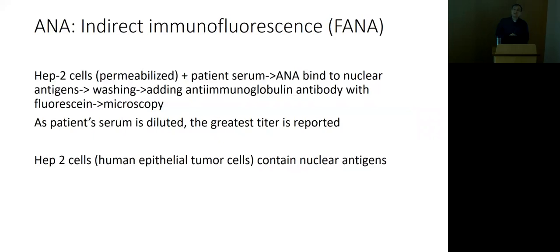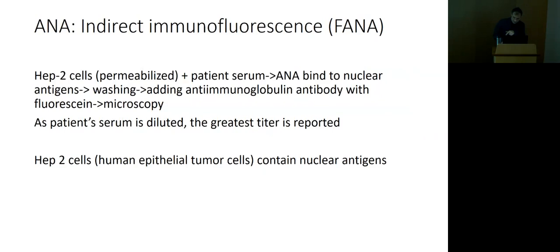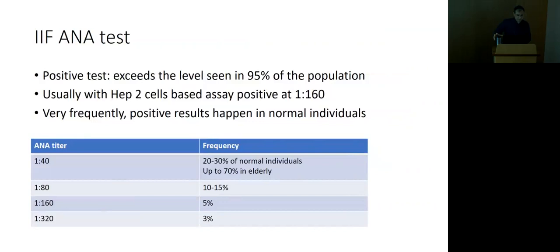When results are not expressed as titers, that's likely the ELISA method. The fluorescent ANA is more sensitive and covers more antigens. For a test to be considered positive, it should exceed the level seen in 95% of the population. With HEp-2 cell-based assays, it's typically positive at 1:160 titer.